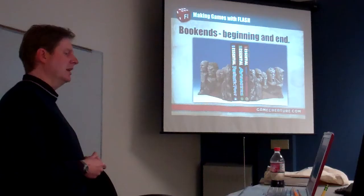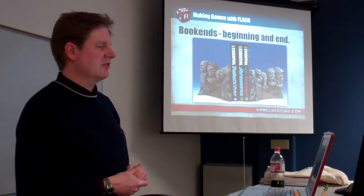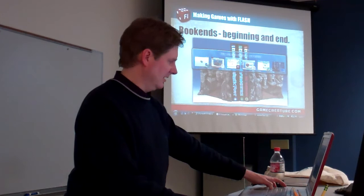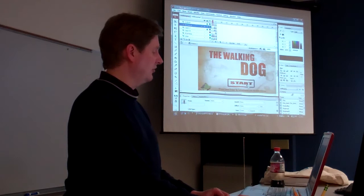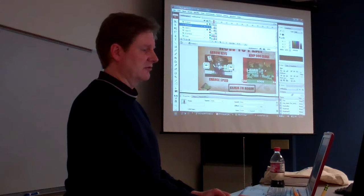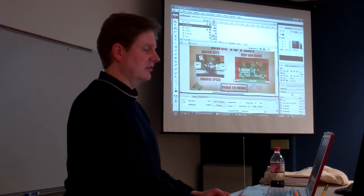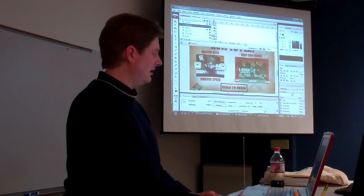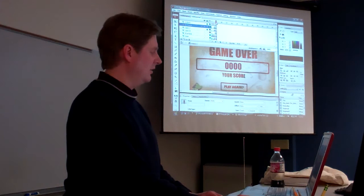The bookends are your intro screen, your instructions, and your game over screen. Going back to look at the game, we have our start button. When the person pushes the start button it takes them to the instructions screen. The instructions say you use the arrow keys to make the zombie go forward and backwards, and you want to keep the dog close to your zombie — if it gets into the red zone, the dog runs away and you lose the game. Then you push 'click to begin,' which takes you to the game itself. After you've lost, the game over screen shows your score and gives you the option to play again.